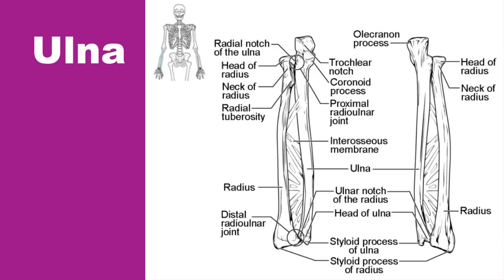The ulna is the medial bone of the forearm and runs parallel to the radius, which is the lateral bone of the forearm. The proximal end of the ulna resembles a crescent wrench with its large C-shaped trochlear notch, which articulates with the trochlea of the humerus as part of the elbow joint. The inferior margin of the trochlear notch is formed by a prominent lip of bone called the coronoid process of the ulna. Just below this, on the anterior ulna, is a roughened area called the ulnar tuberosity. To the lateral side and slightly inferior to the trochlear notch is a small smooth area called the radial notch of the ulna, which is the site of articulation between the proximal radius and the ulna, forming the proximal radio-ulnar joint. The posterior and superior portion of the proximal ulna makes up the olecranon process, which forms the bony tip of the elbow.